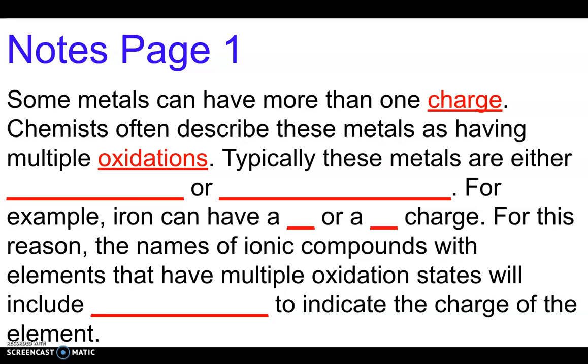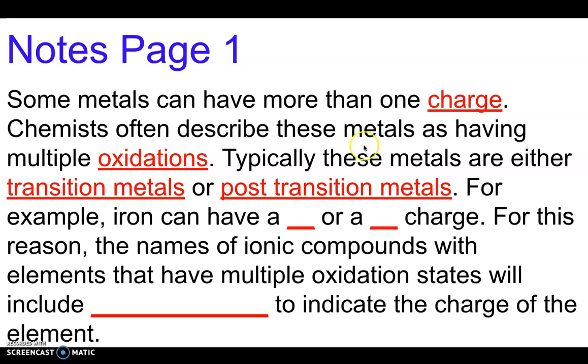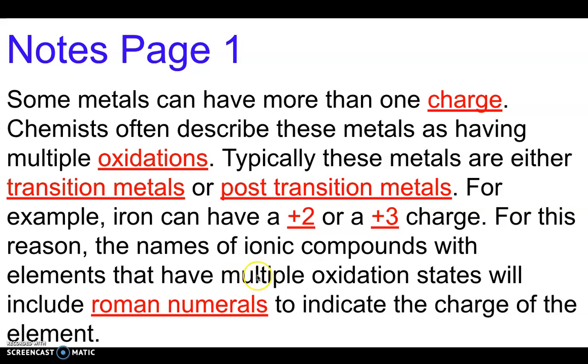Typically these metals are either transition metals or post transition metals. Iron for example is a transition metal, and like I said it can have a +2 or +3 charge. For this reason, the names of ionic compounds with elements that have multiple oxidation states will include Roman numerals to indicate the charge of the element.